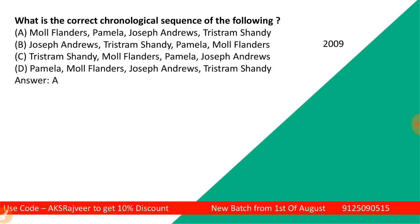What is the correct chronological sequence of the following? The answer is A: Moll Flanders, Pamela, Joseph Andrews, and Tristram Shandy. Moll Flanders is a work by Daniel Defoe, Pamela is by Richardson, and Joseph Andrews is by Henry Fielding. For a question for you — Tristram Shandy is by whom? Write your answer in the comment box. This was part of your UGCnet exam in the year 2009.